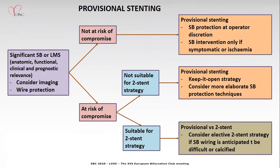Before provisional stenting, assess the side branch: is it functionally significant? Perform FFR and assess angio-clinical correlation. You can perform imaging and assess the plaque burden, assess the minimum luminal area — particularly in left main bifurcation. If LCX MLA is less than 3.7 square mm and plaque burden is more than 56%, these patients definitely require side branch intervention.